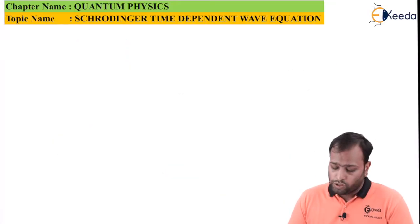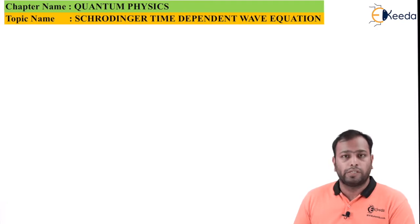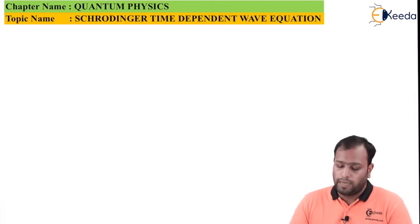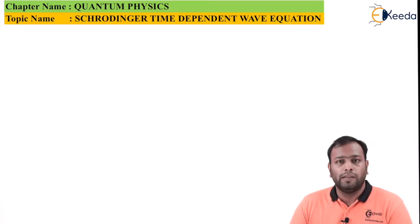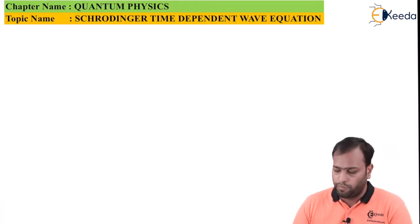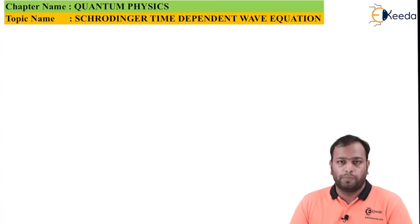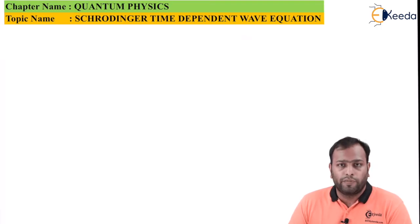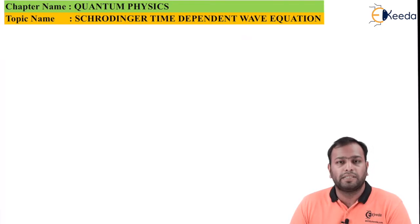To begin, let's recall Schrödinger's time independent wave equation from the last class. What is the difference between the time dependent and time independent wave equations? The difference is very similar to what the names suggest: in one equation we don't take time as a factor, and in the second equation we do take time as the factor.